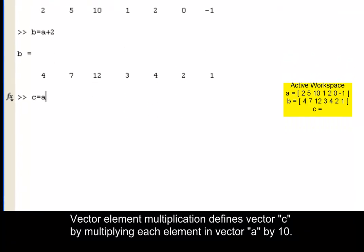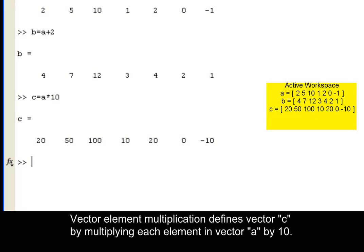Vector element multiplication defines vector C by multiplying each element in vector A by 10.